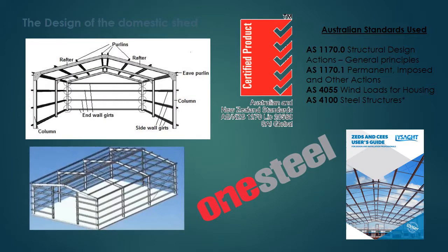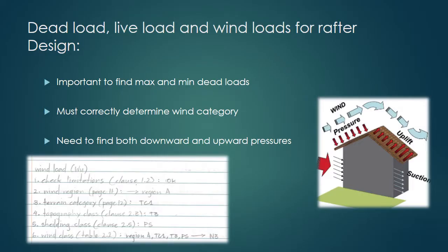The design of the domestic shed. Here is a summary of the key findings of each stage of the design process. Dead load, live load, and wind loads for rafter design. It is important to find the minimum and maximum dead loads because at the beginning of construction, the dead loads are different than the dead loads of the finished structure and the structure behaves differently. For wind loads, you must determine correct wind category as different categories will affect the ultimate and serviceability limit state. You need to find the most severe load combination for downward and upward pressures.